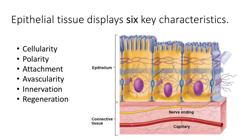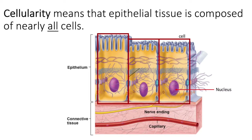Now let's talk about the six characteristics of epithelial tissue. The first important characteristic is cellularity. Epithelial tissue is just chock full of cells — there's no extracellular matrix. Using a cinder block analogy, the cinder blocks are just stacked next to each other.